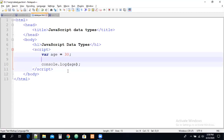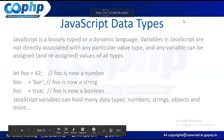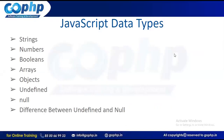So we can save any kind of value inside a variable. Now let us see the supported data types in JavaScript. We have strings, numbers, boolean, arrays, objects, undefined, and null. Undefined and null are the special data types in JavaScript, and there is also an interview question about the difference between undefined and null. Let us see all the data types one by one.